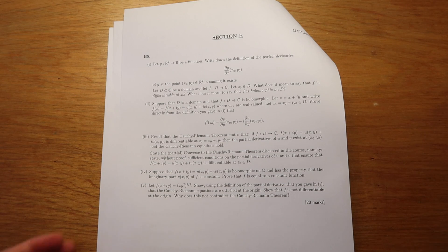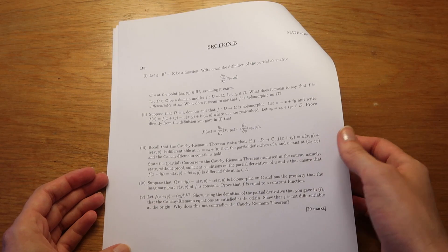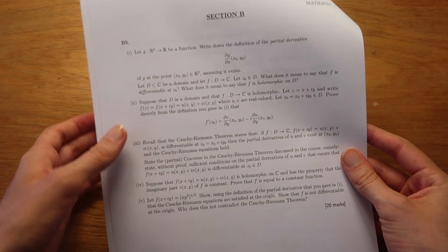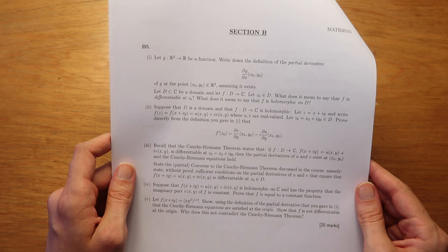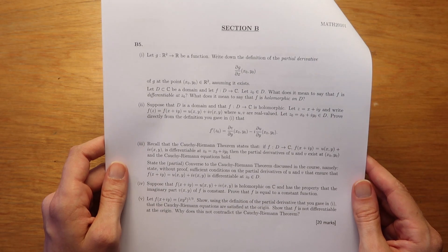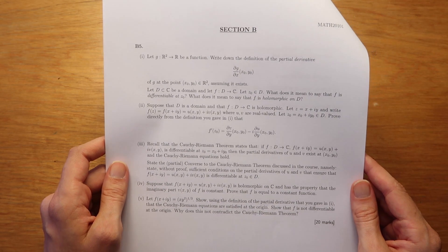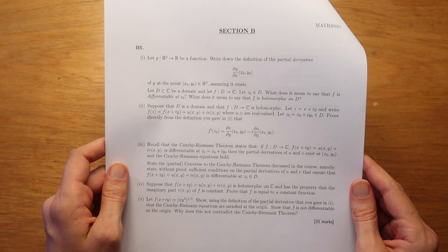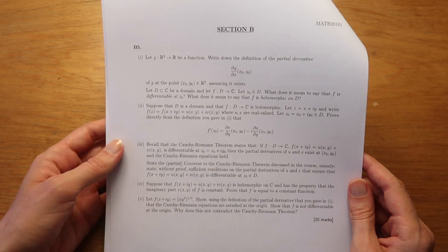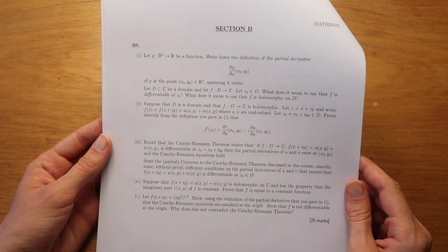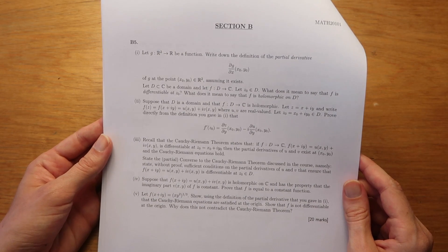This first question deals with something called the Cauchy-Riemann theorem and essentially it's a set of partial derivatives that can be used to test if a function is complex differentiable. That means that the derivative exists. It's also called holomorphic if that is true.